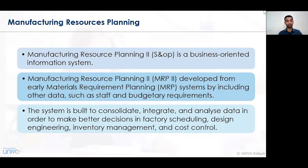Manufacturing resource planning 2 is an extension of material requirement planning. Material requirement planning is a system implemented for effective management of materials in the organization, ensuring the assembly line is not affected and there is proper communication between the inventory or stores department and the production department.